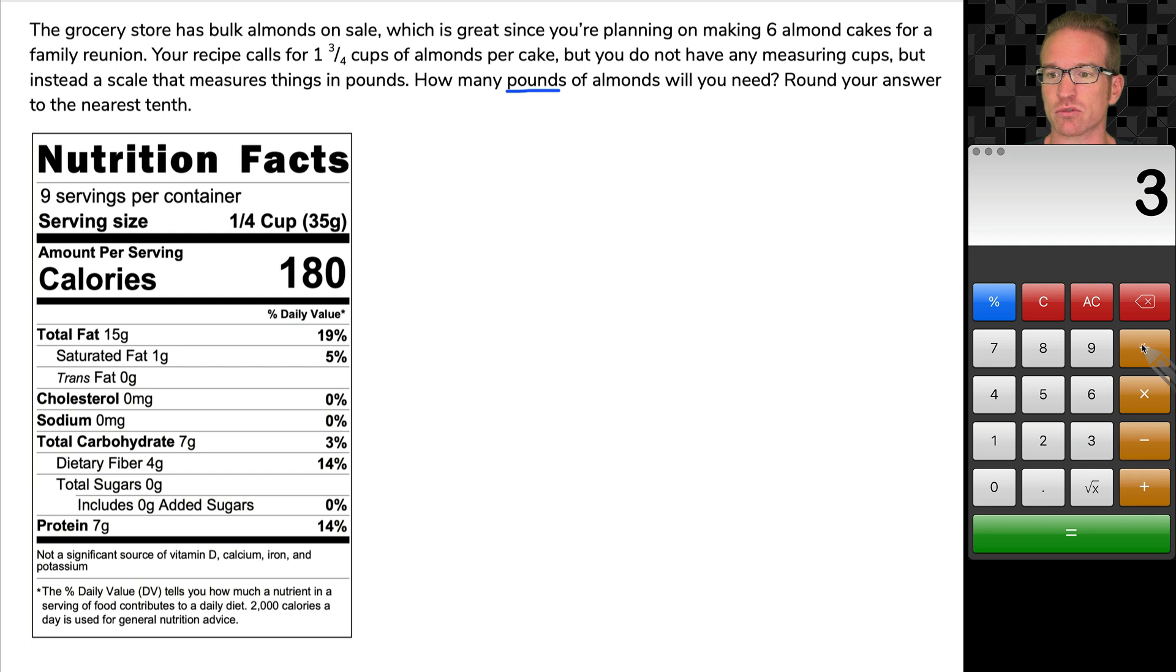One and three fourths is 1.75. If you think about three fourths, three divided by four is 0.75. So one and three fourths is 1.75.